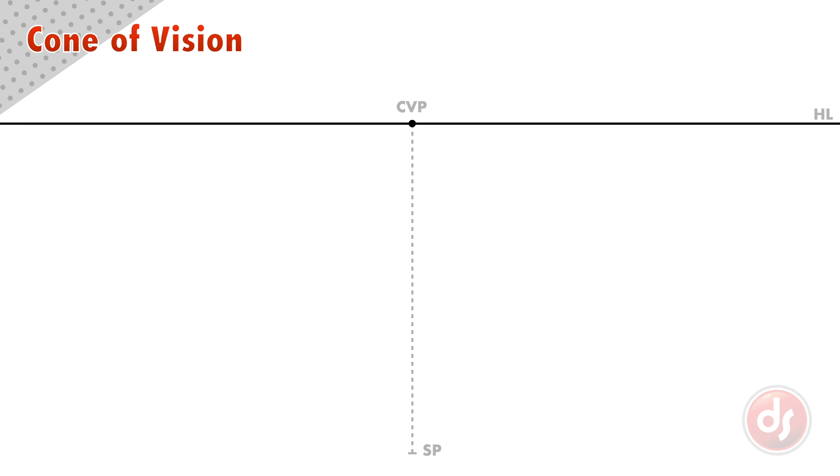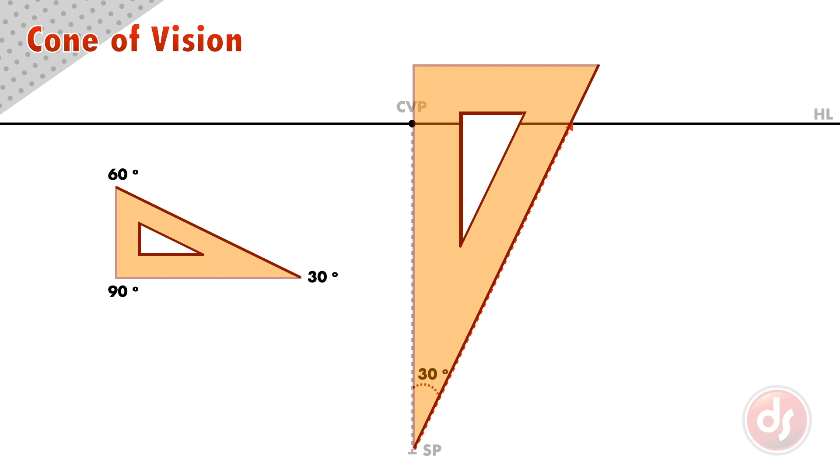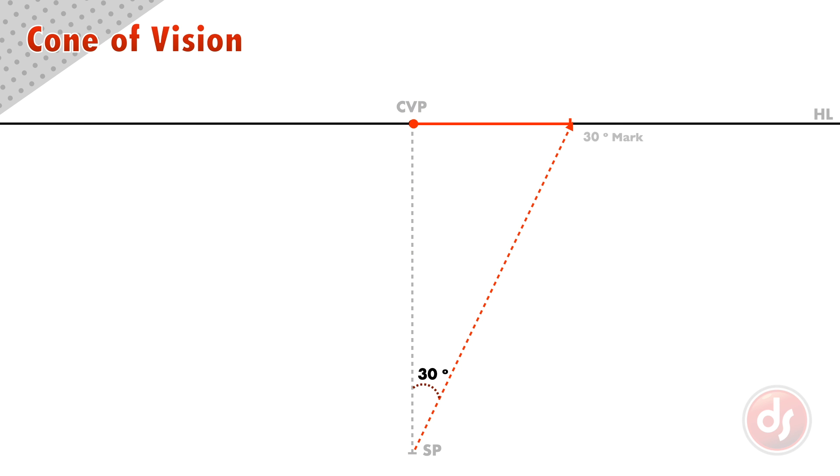To create a cone of vision in our perspective drawings, we take a line from the station point up to the horizon line at a 30 degree angle. The easiest way to do this is to use a standard 30, 60, 90 degree triangle fixed at the station point. Next we draw a circle around the 30 degree mark using the center of vision point as the center of the circle.